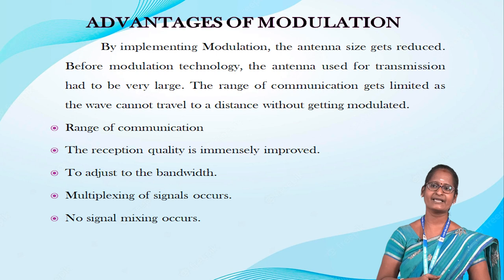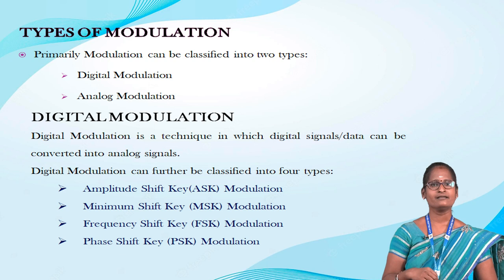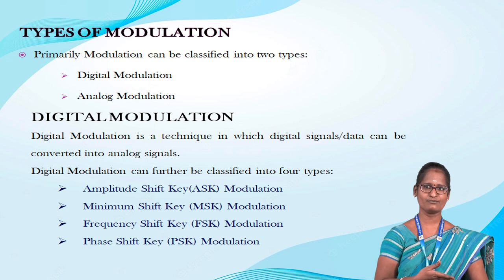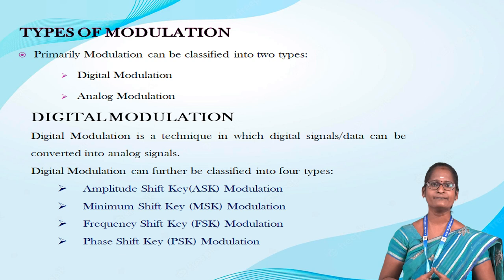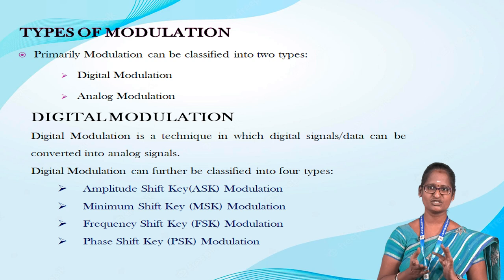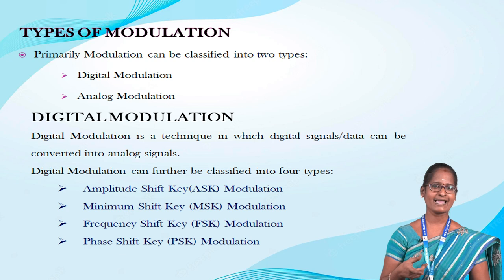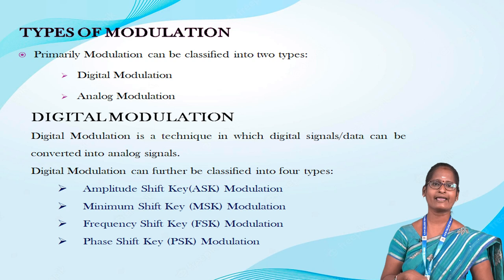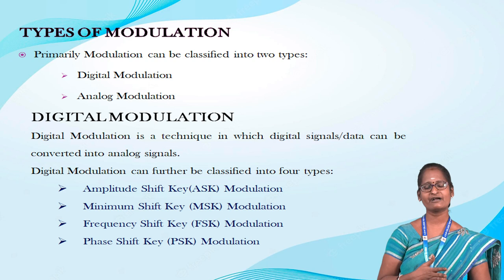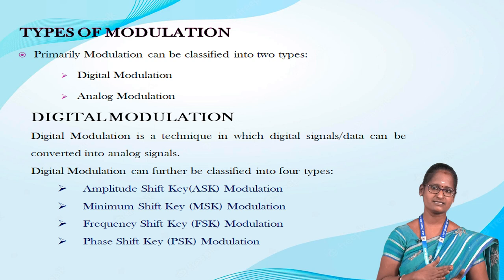The types of modulation: primarily modulation can be classified into two types — digital modulation and analog modulation. Digital modulation is a technique in which digital signals or digital data can be converted into analog signals, for example baseband signals. Digital modulation is also classified into four types: ASK (Amplitude Shift Key) modulation, MSK (Minimum Shift Key) modulation, FSK (Frequency Shift Key) modulation, and PSK (Phase Shift Key) modulation.